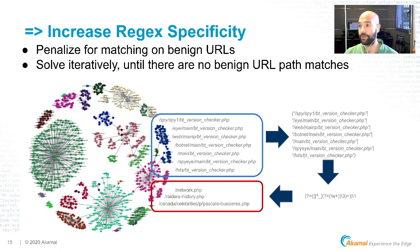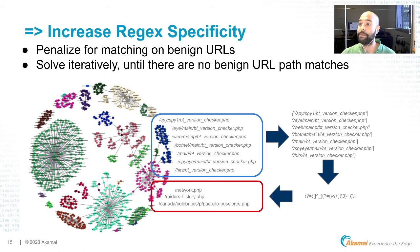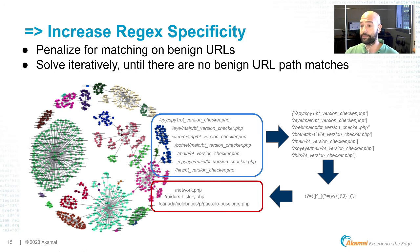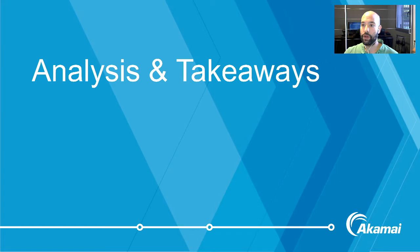We solve this problem iteratively. In each step we either generalize the model or penalize it for matching benign URLs, until we converge into a regular expression that matches all URL paths within each cluster but never matches benign and legitimate URLs in our dataset. At this point I'll hand over the stage to Jordan to talk about the analysis of the system and the takeaways.